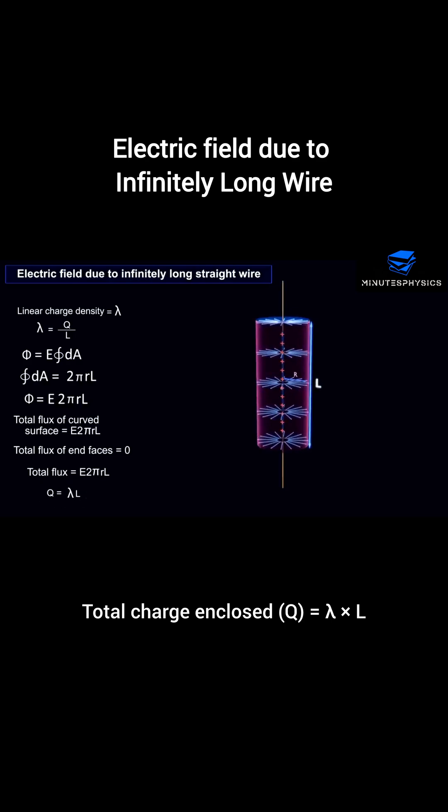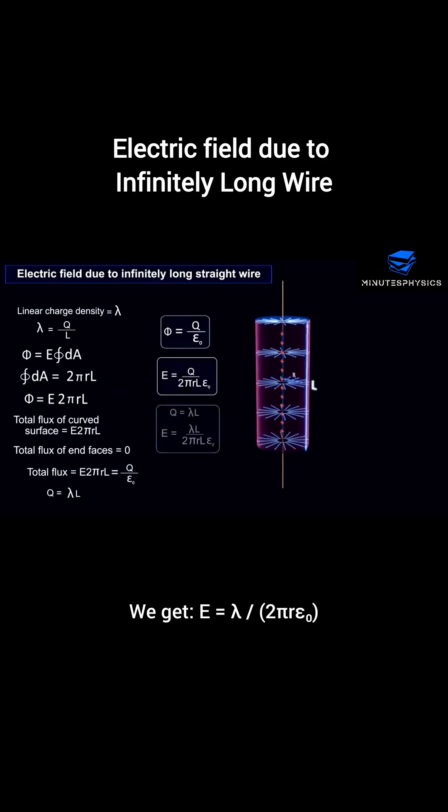Total charge enclosed is lambda times l. According to Gauss's law, E times 2 pi r l equals lambda l by epsilon zero. Cancel l from both sides. We get E equals lambda by 2 pi epsilon zero r.